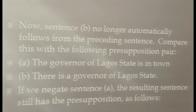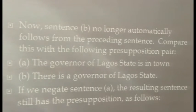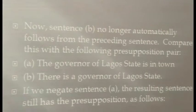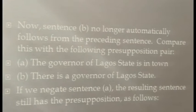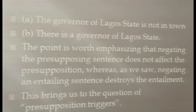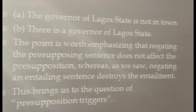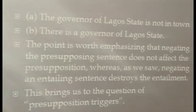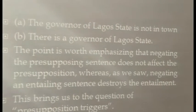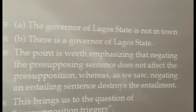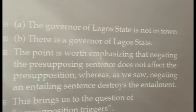Compare this with presupposition: 'the governor of Lagos State is in town' presupposes 'Lagos State has a governor'. Unlike entailment, if we negate sentence A — 'the governor of Lagos State is not in town' — negating that sentence does not affect the truth value of the presupposition. The presupposition still remains constant: there is a governor of Lagos State. This brings us to the very important question of presupposition triggers.